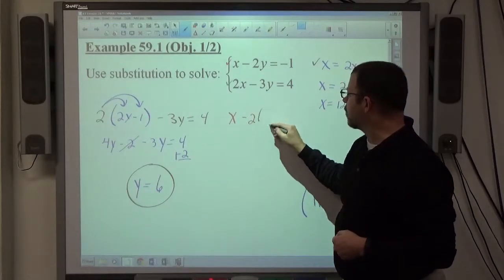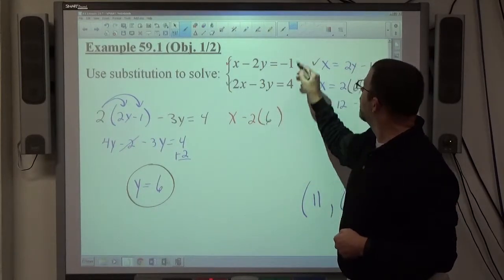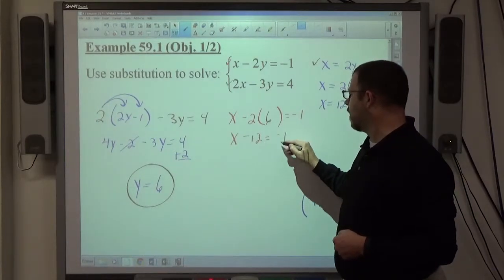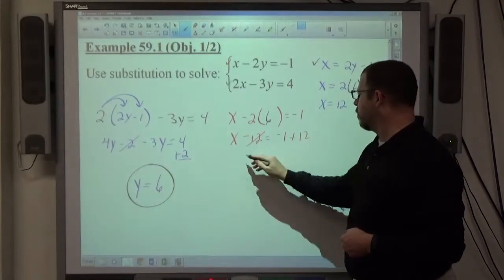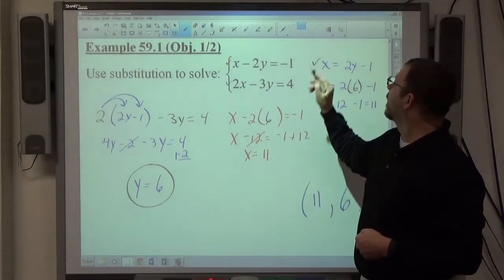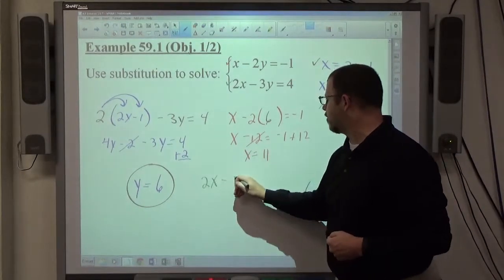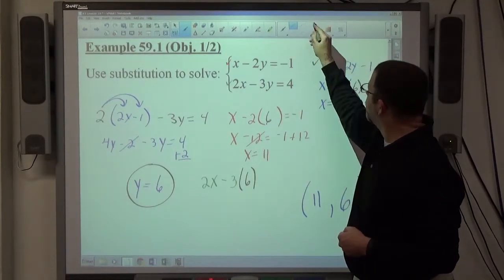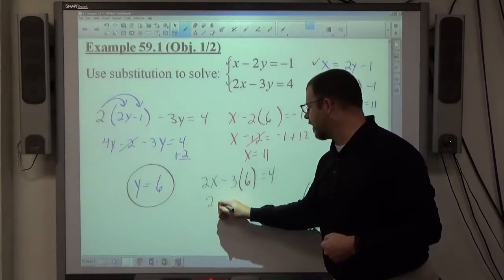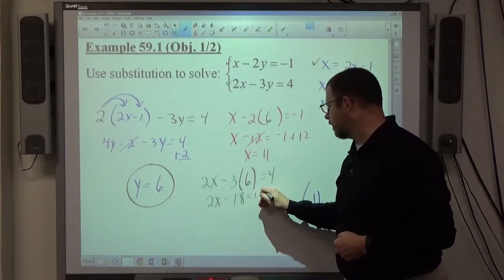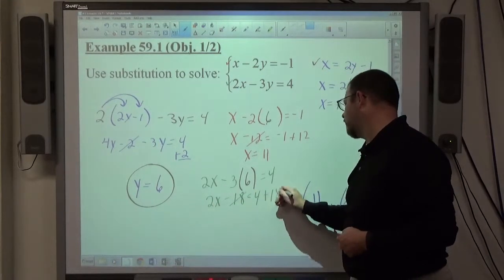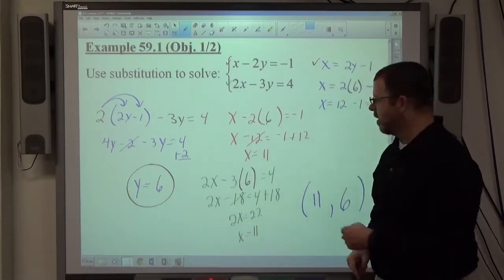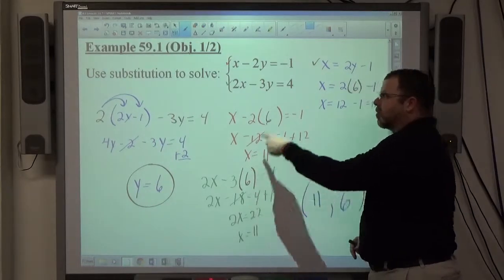Now, going back to the red equation. x, we don't know yet, minus 2 times y, which is 6, equals negative 1. That gets me x minus 12 equals negative 1. Move the 12 over. Negative 1 plus 12 equals 11. If I've gone back to the green equation, 2x, which I don't know yet, minus 3y, which is 6, is supposed to equal 4. That gets me 2x minus 18 equals 4. Move the 18 over, becomes plus 18. 2x equals 22. Divide by 2, x equals 11. That's algebra. That's algebra. This is arithmetic.